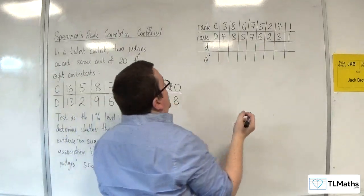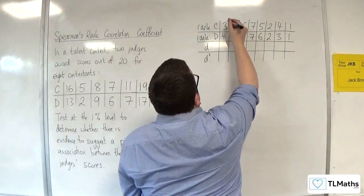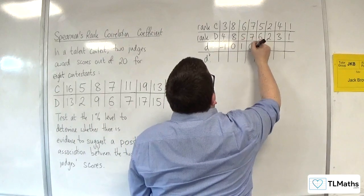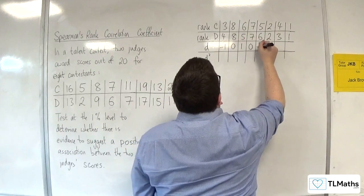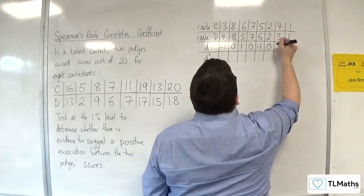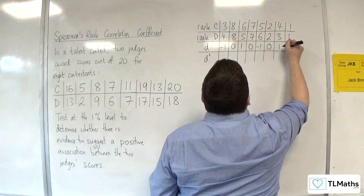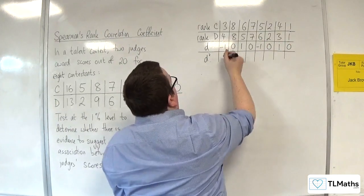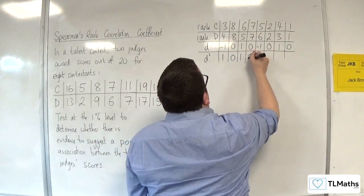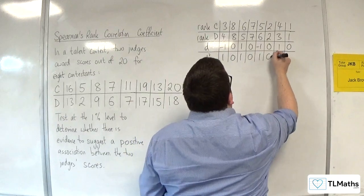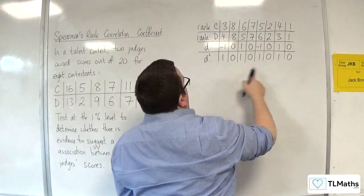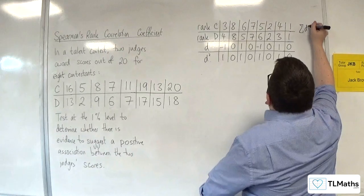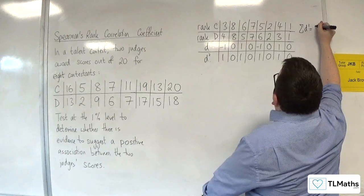Let's find d, the difference between the ranks: minus 1, 0, 1, 0, minus 1, 0, 1, 0. Squaring each of those we get 1, 0, 1, 0, 1, 0, 1, 0. So the sum of d squared is 4.